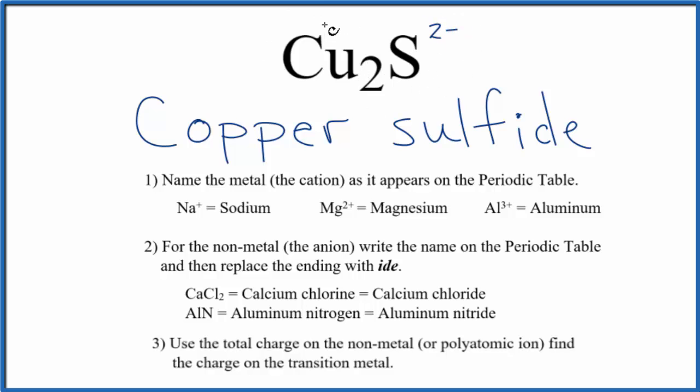So copper has to be 1 plus. 2 times 1 plus, that's 2 plus. 2 plus and 2 minus, that gives us a net charge of zero. So we've found the charge on the transition metal here by looking at the nonmetal that it's bonded to.